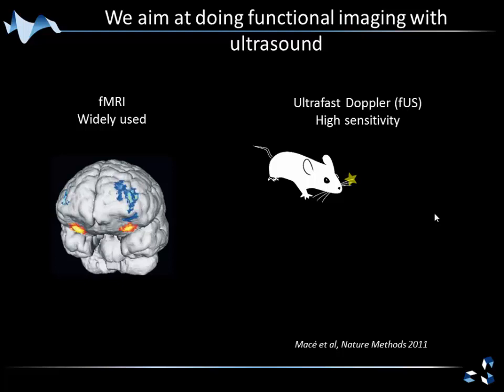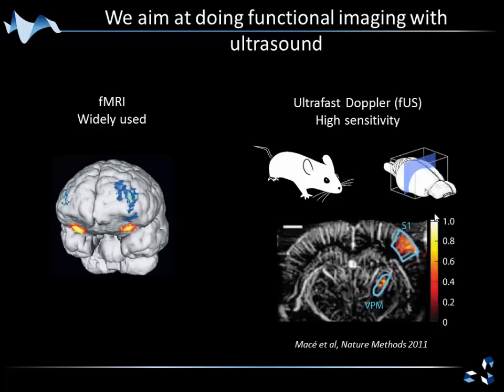For example, if we stimulate the whisker of a rat and look at a coronal section of the brain, we are able to see blood volume changes in the area related to the whisker in this rat. So this was the first step, and we wanted to increase a bit more the sensitivity of the technique.